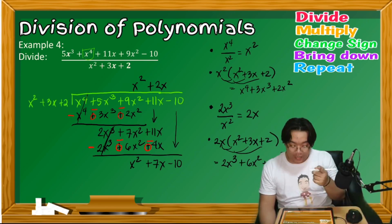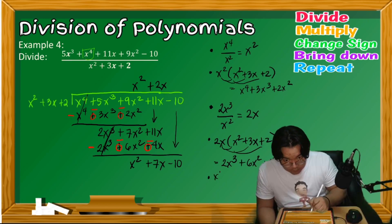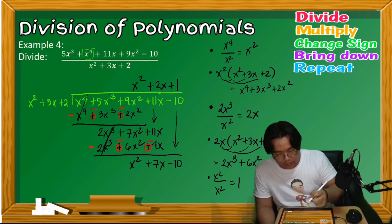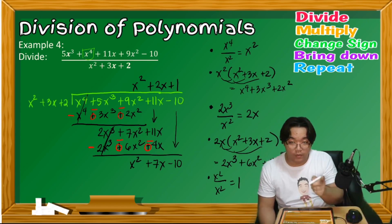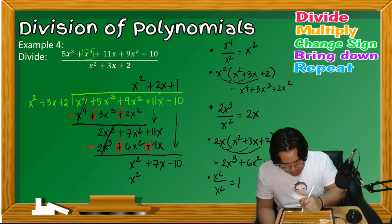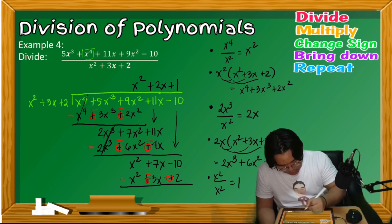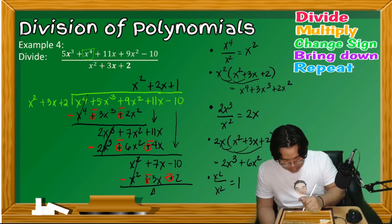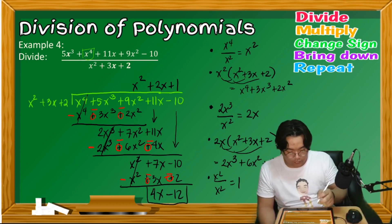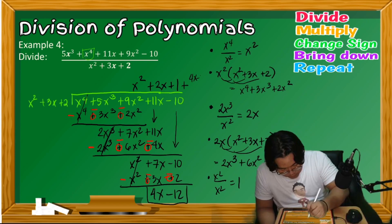Repeat step 1: x² divided by x² gives 1, so write plus 1 on top. Multiply 1 by the divisor to get x² + 3x + 2. Change the signs, then add: 7x − 3x = 4x, and negative 10 − 2 = negative 12. The remainder is 4x − 12, written as plus (4x − 12) over the divisor x² + 3x + 2.